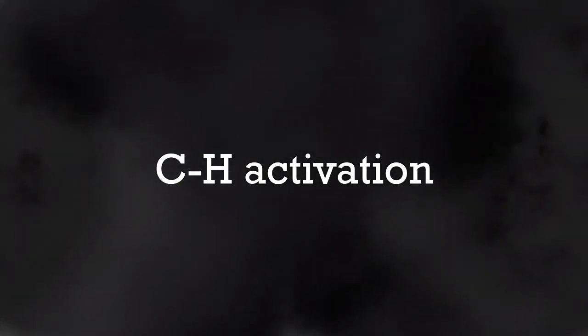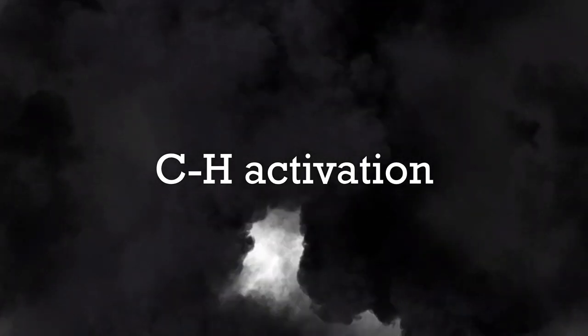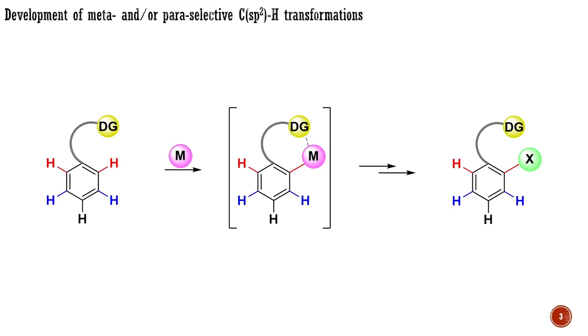Hello, everyone, and welcome back to the series of lectures on CH activation. In our previous session, we delved into the factors influencing selectivity in CH transformations. We examined the main pathways of CH bond cleavage enabled by transition metals, and I introduced the concept of directing group-assisted CH activation. So far, I have described only direct CH transformations of CH bonds located ortho to the directing group. But what about meta and para positions? With modern developments in directing group-assisted CH activation, it is now possible to selectively functionalize even remote CH bonds.